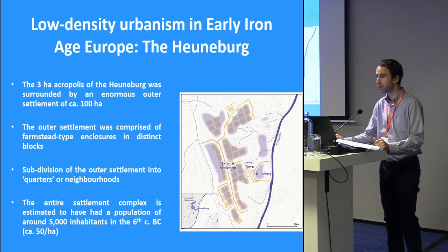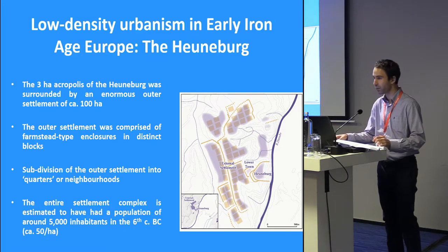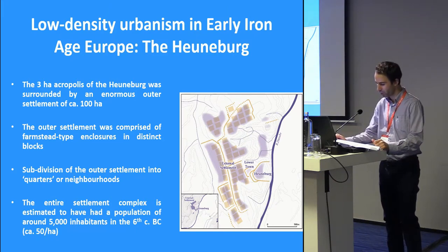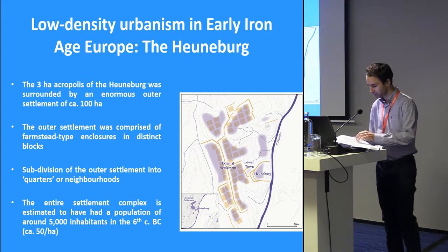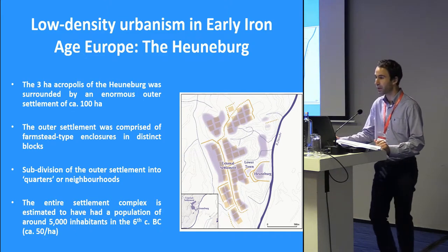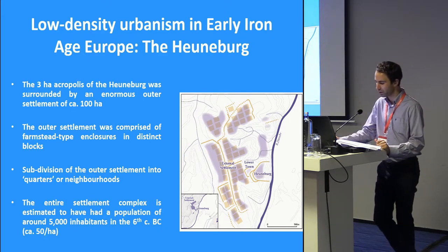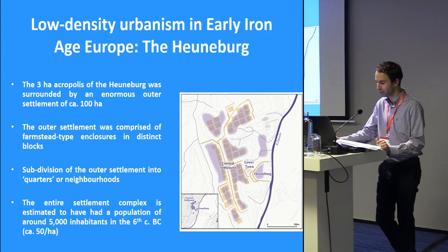As indicated by Fletcher himself, the Late Iron Age Opida fit well into the notion of low-density urbanism, and the same can be said about earlier centers such as the outer settlement of the Heunenburg, or the nature of the late Hallstatt and early Latin agglomeration at Bourges. In the first half of the 6th century BC, the three-hectare acropolis of the Heunenburg in southwest Germany was surrounded to the west, north and southwest by a large outer settlement of around 100 hectares.